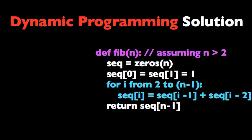So here's one very simple dynamic programming solution. In this example, we're going to assume that n is larger than 2, just for simplicity's sake, and let's just say we're trying to find the sixth Fibonacci number as our previous example.